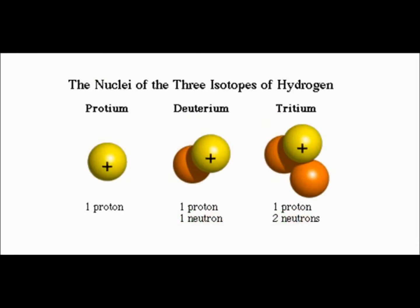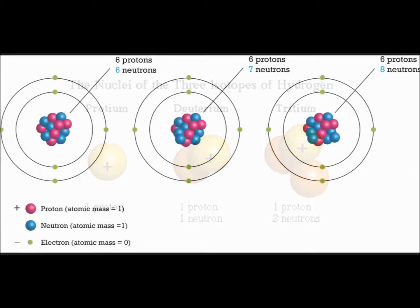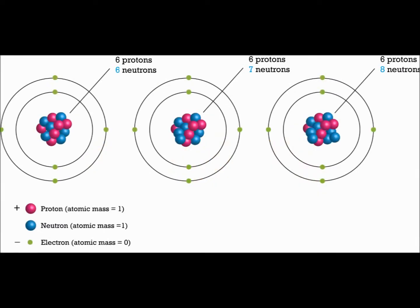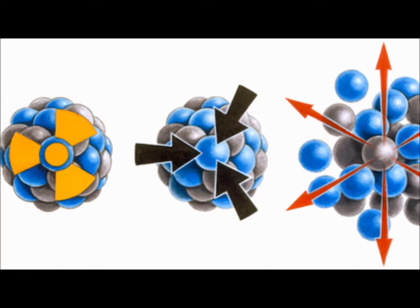The only time the element stays the same when it is changed is when it has a standard amount of protons but a different amount of neutrons. This is called an isotope.